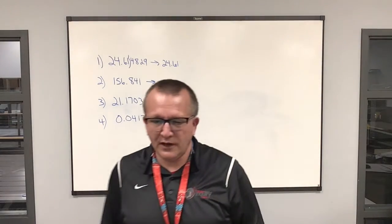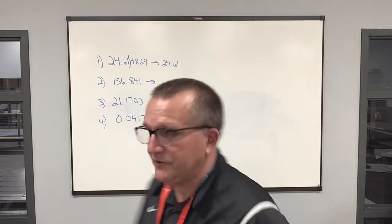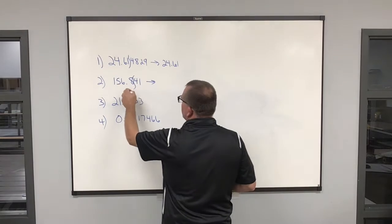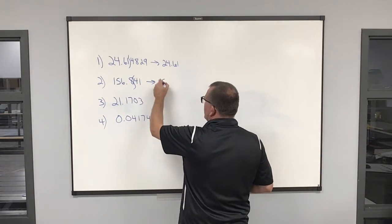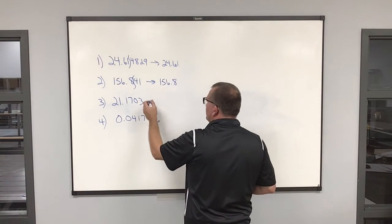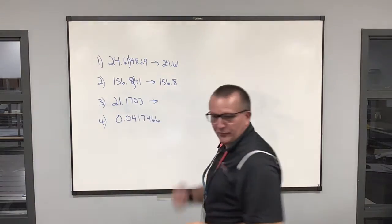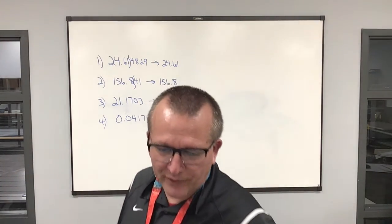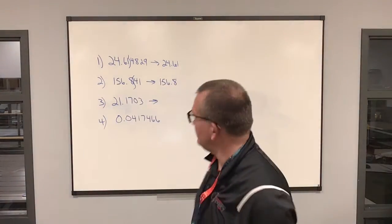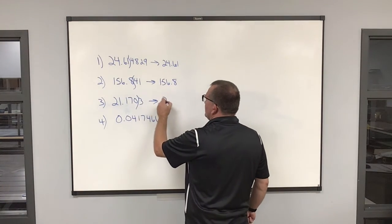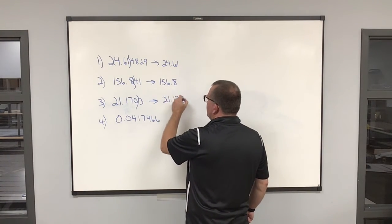Number two, I want to round to one place after the decimal, so I want to round here. Four tells me to leave it alone, 156.8. Number three, I want to round to three places after the decimal, which is here, 21.175 and then zero.